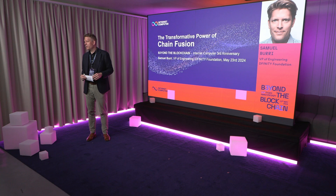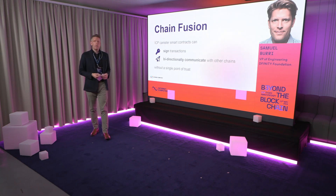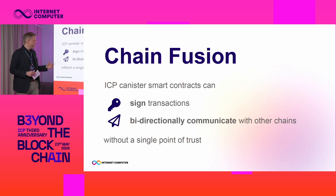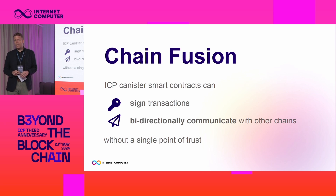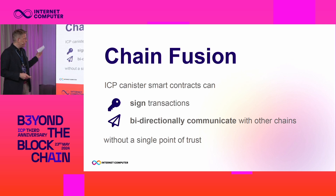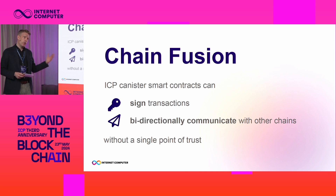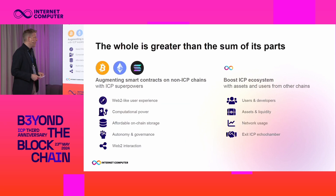It's my pleasure to be talking about the transformative power of chain fusion. What do we mean by chain fusion? On ICP, canister smart contracts can sign transactions and interact in a bidirectional fashion with other chains without a single point of trust, and we call this capability the chain fusion technology. What is only four lines on this slide is actually a major technical accomplishment and also opens a lot of doors to new possibilities.